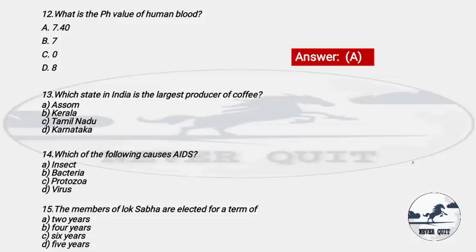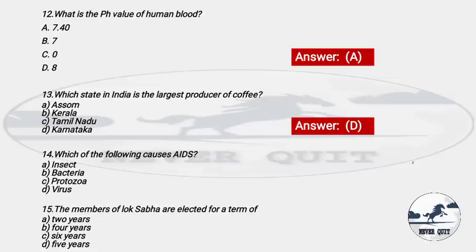Question 13: Which state in India is the largest producer of coffee? Options: A) Assam, B) Kerala, C) Tamil Nadu, D) Karnataka. The right answer is option D — Karnataka. After Karnataka, the next largest producers are Kerala and Tamil Nadu. As a bonus question, tell me in the comments which country is the largest producer of coffee in the world.